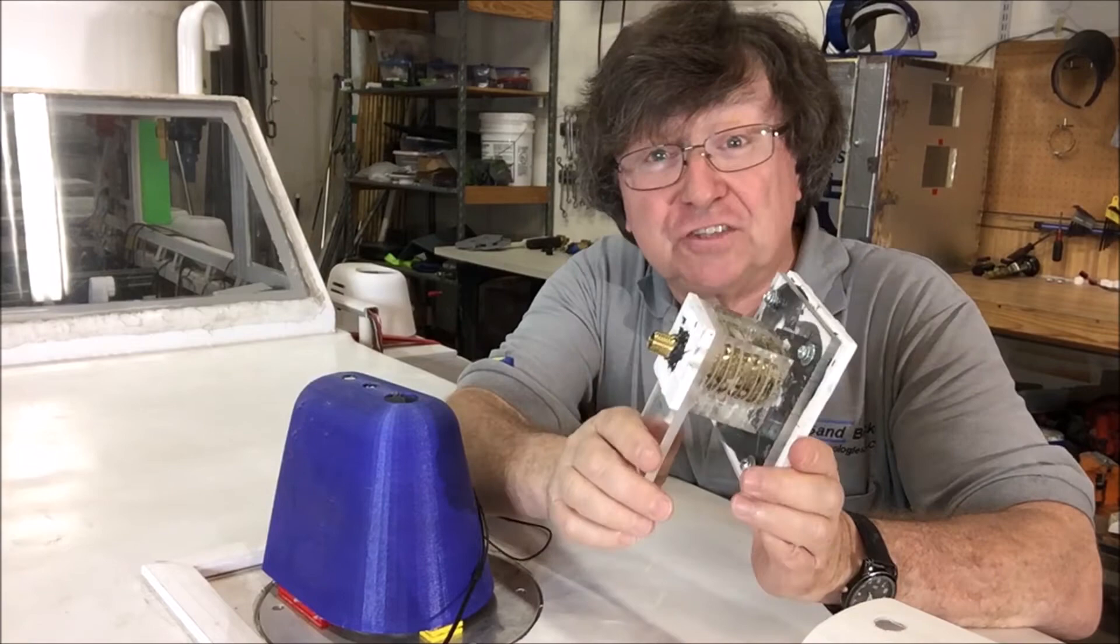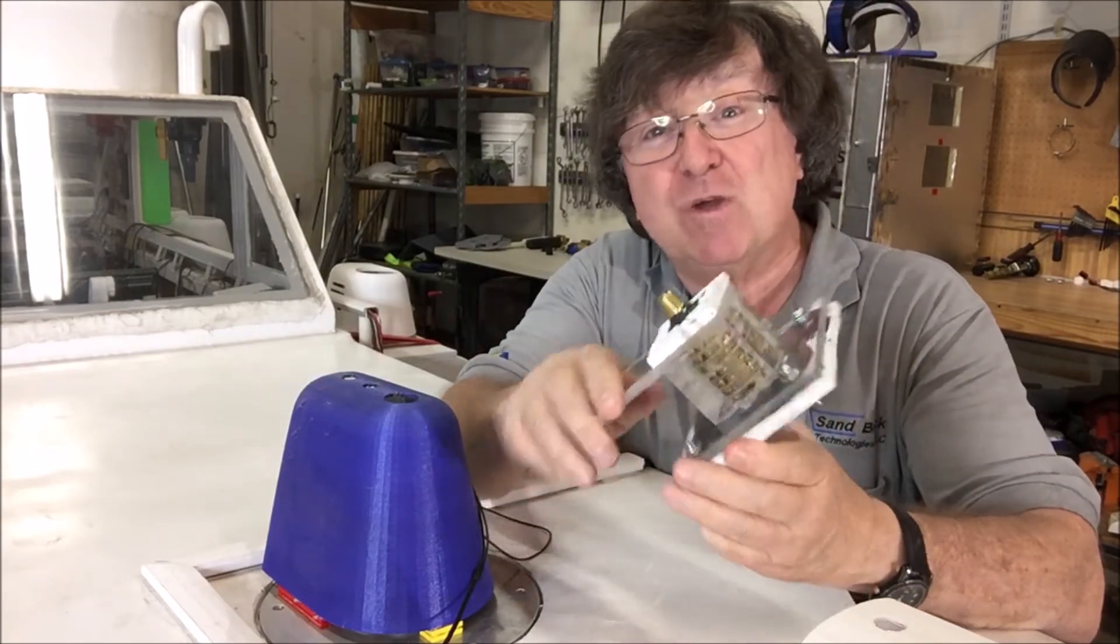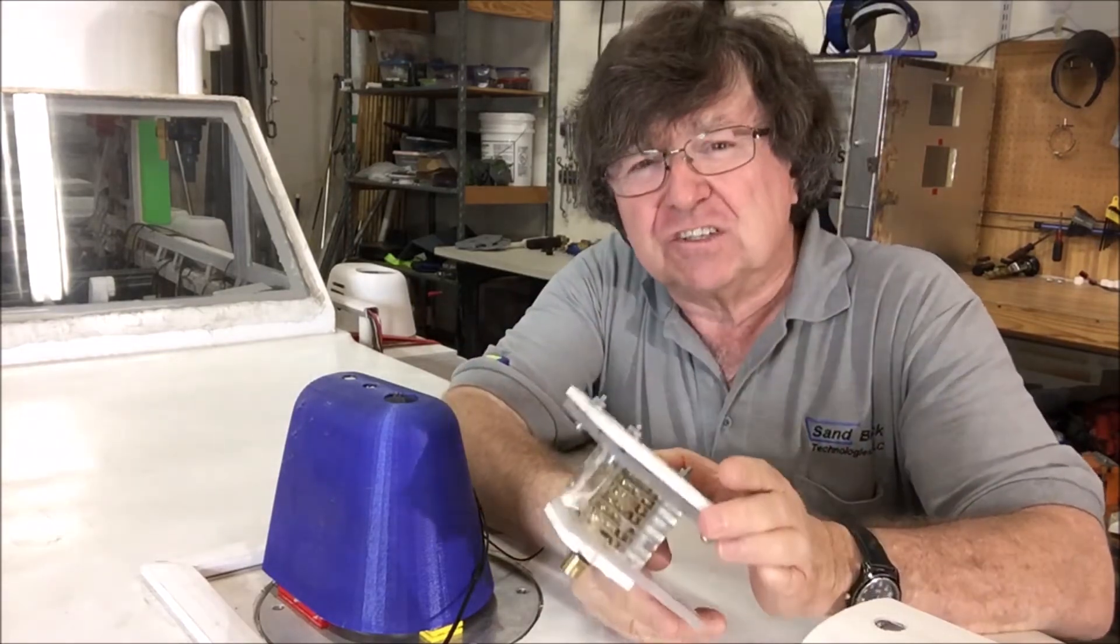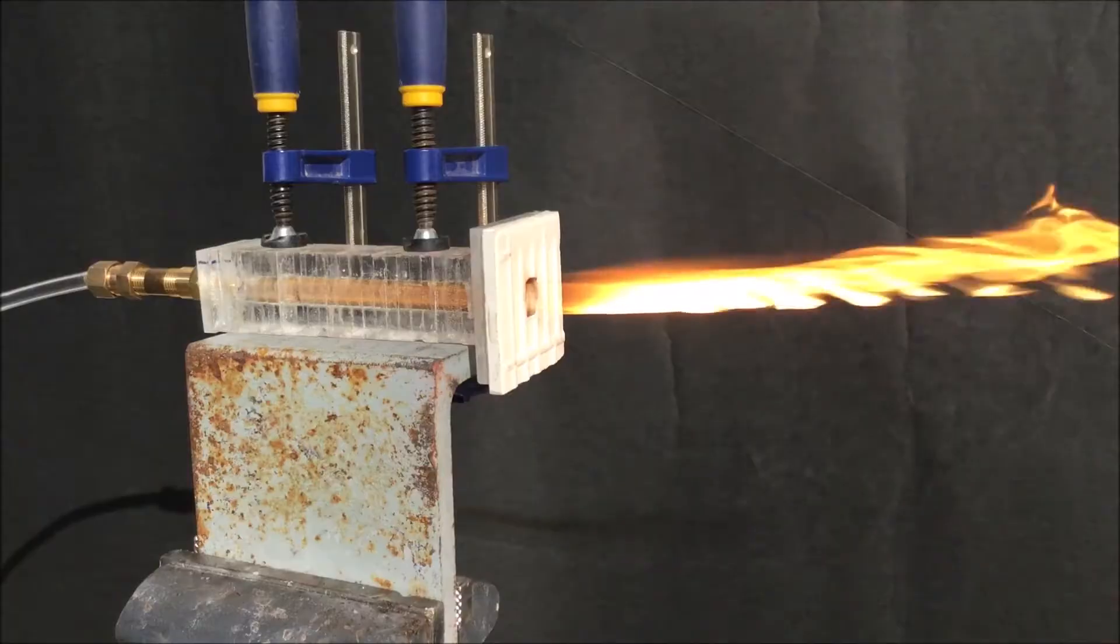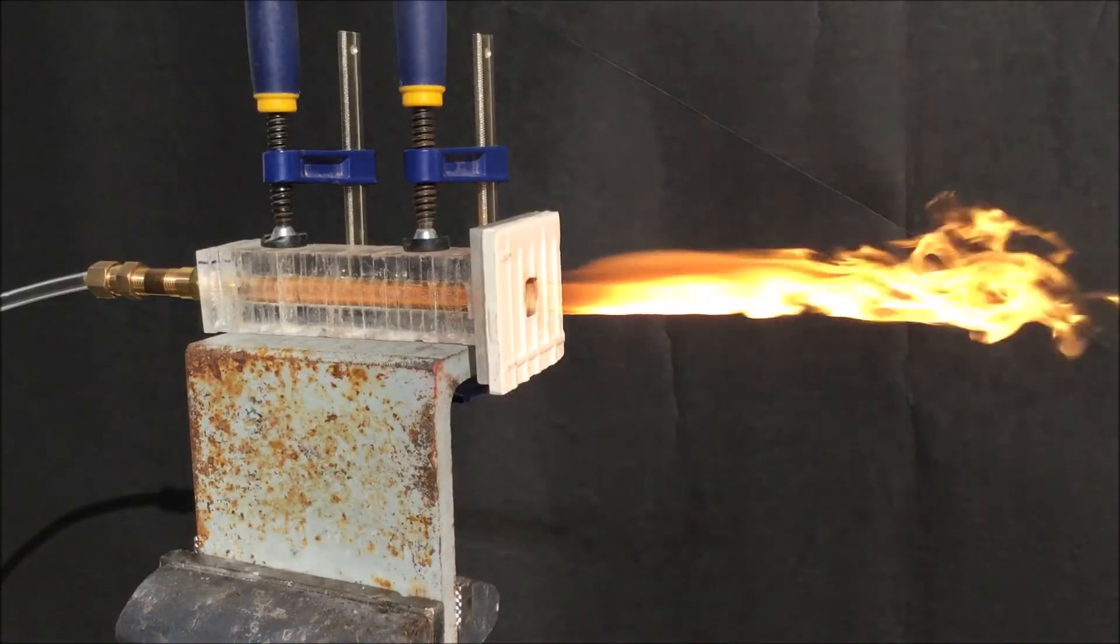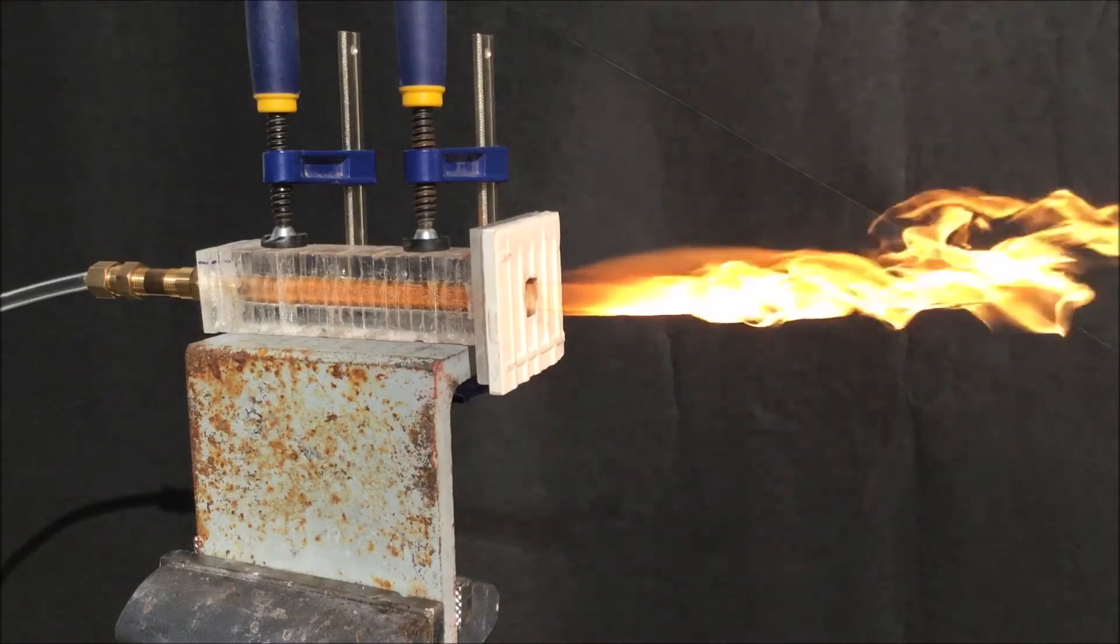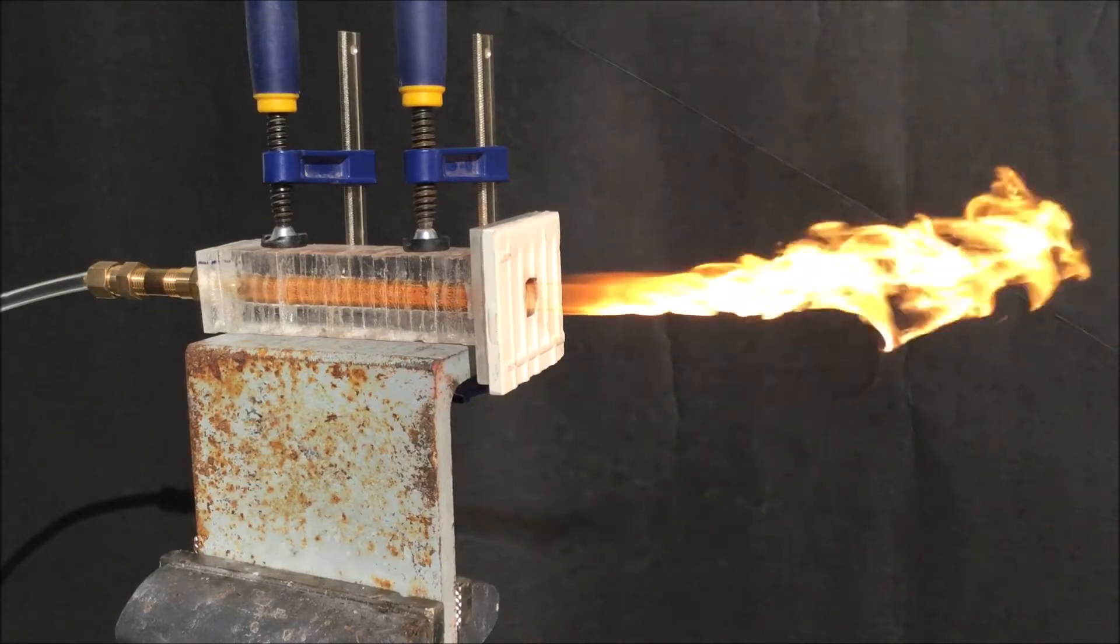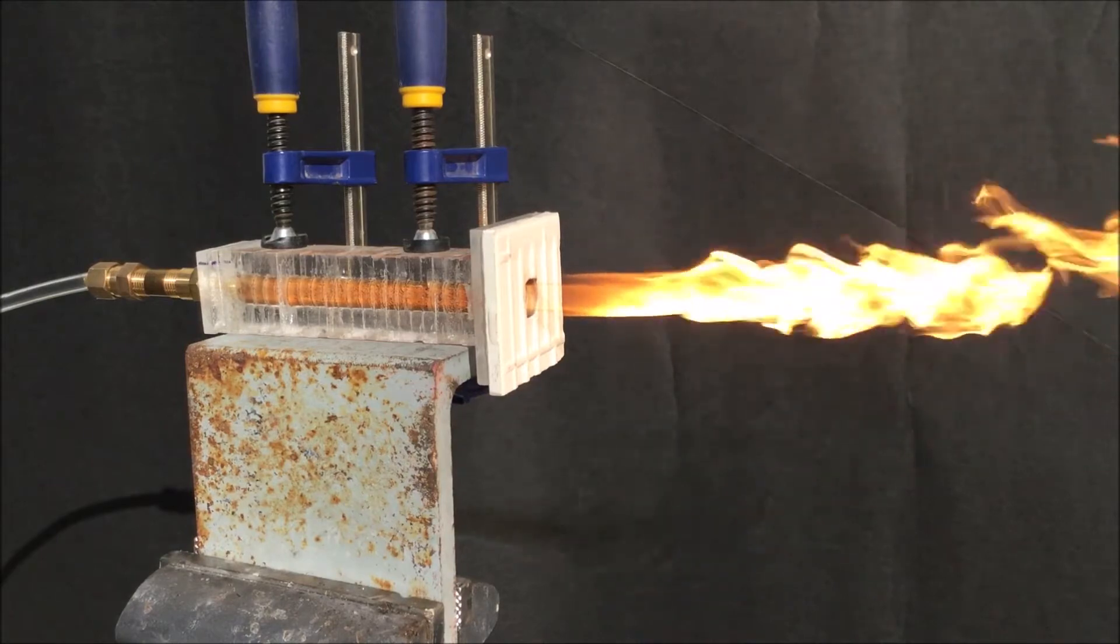The internals on block seven are identical to those of block six. However, we made some modifications to the externals. On the earlier tests, we just clamped it to a vice and away we went. This is from test number four. The problem is the acrylic starts to get soft. We run these for three minutes. The clamp squeezes the block, and by the end of the run, it's not quite as secure as it should be.